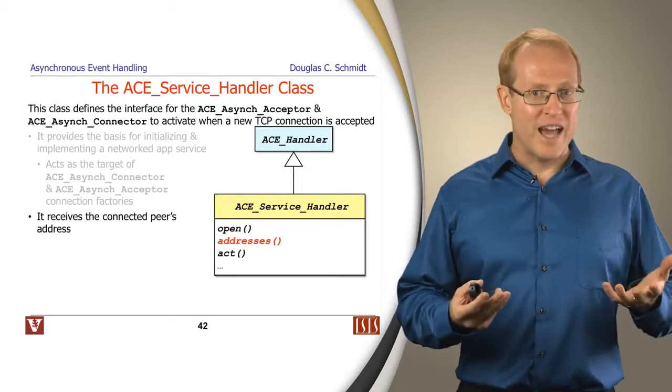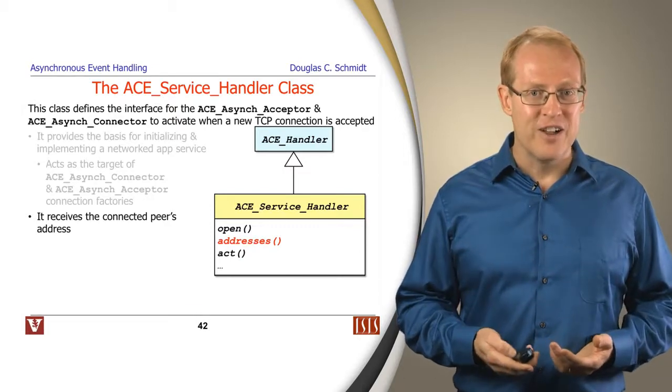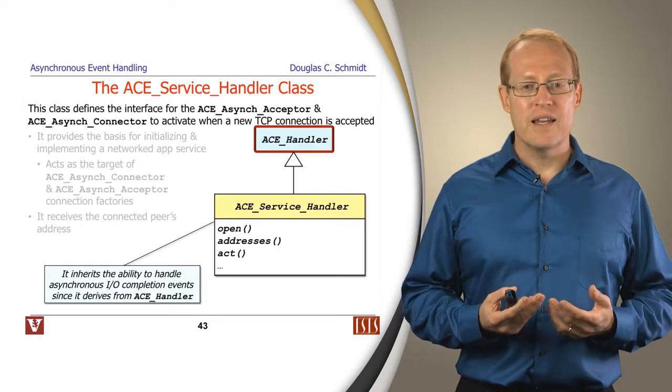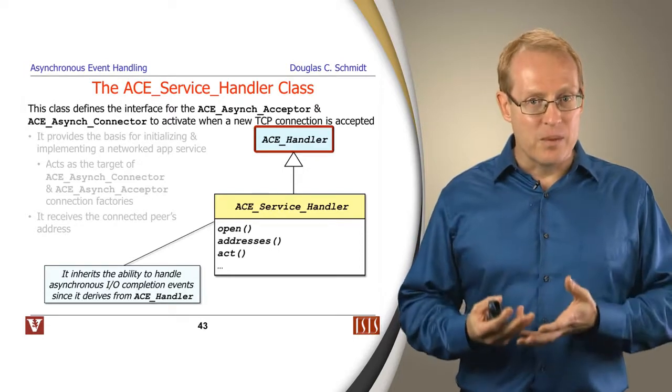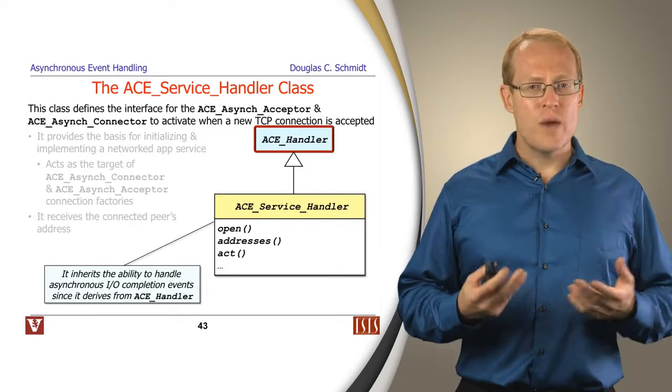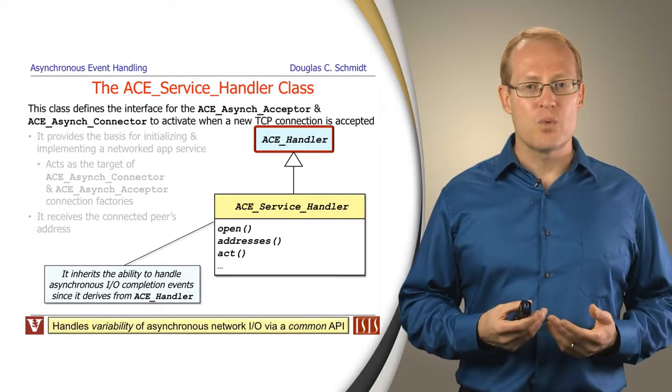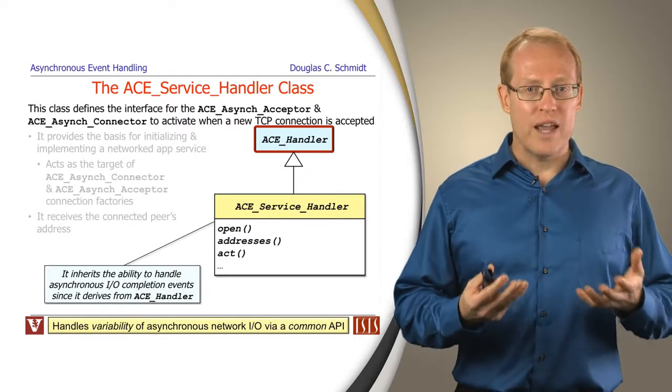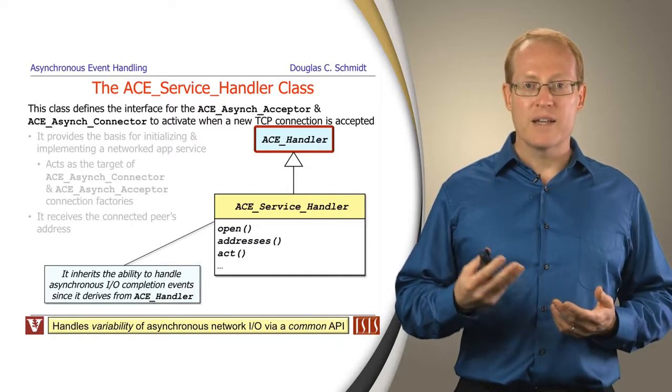Because it inherits from ACE handler, it is able to handle the completion of IO events, things like asynchronous reads and writes. ACE service handler is typically used in cases where you want to handle the variability of network asynchronous IO behind a common interface.